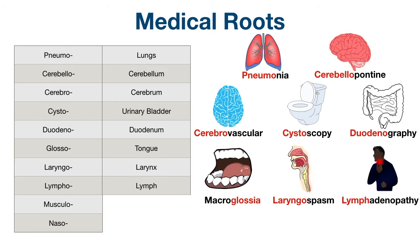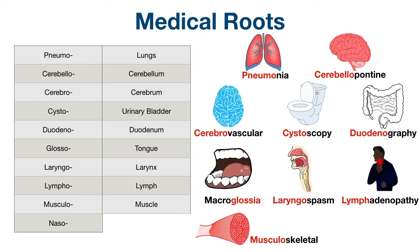The next root is lympho, which means lymph. An example is lymphadenopathy, which is a disease affecting the lymph nodes and usually causes swelling to the lymph nodes. Next is musculo, which means muscle. Remember, myo also means muscle. You can think of musculoskeletal, which relates to the musculature and skeleton together. Finally, we have naso, which means nose. You can think of nasopharynx, which is the upper part of the pharynx continuous with the nasal passages.